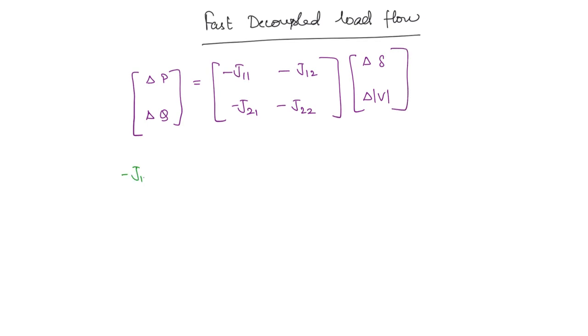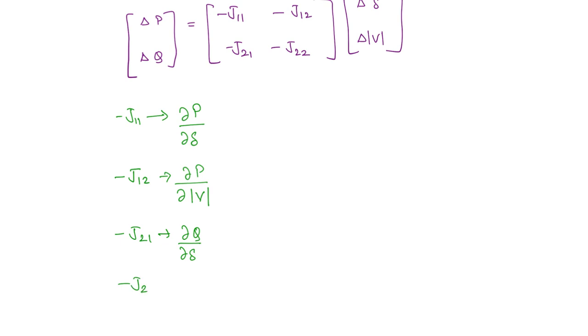So what is minus J11 here? This is the partial differentiation of the real power with respect to the voltage angle. And minus J12, this is the partial differentiation of the real power with respect to the voltage magnitude. Similarly minus J21 is dQ by d delta and minus J22 this is dQ by dV.